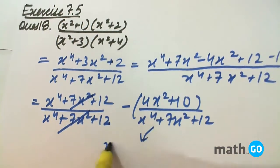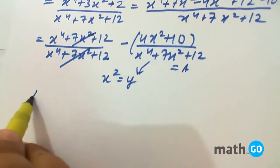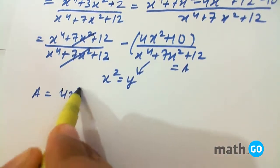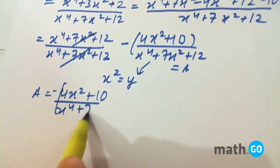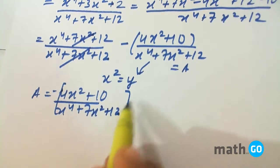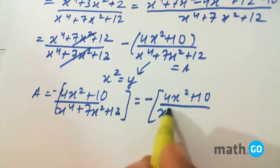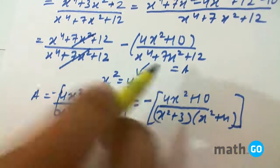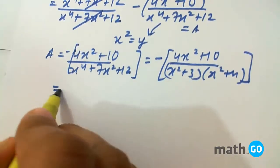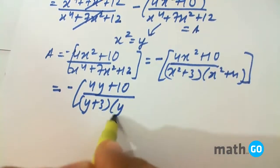In this, we keep x squared equals to y. Then we will have the expression 4x squared plus 10 upon x to the power 4 plus 7x squared plus 12, which is equal to 4x squared plus 10 upon x squared plus 3 into x squared plus 4. On keeping x squared equals to y, we get 4y plus 10 upon y plus 3 into y plus 4.